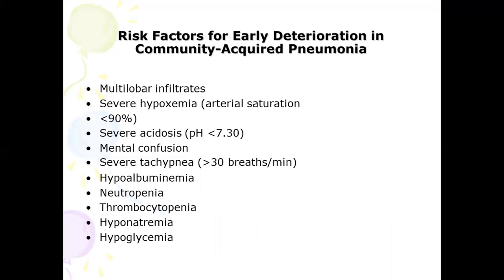We should know the risk factors that lead to early deterioration in community-acquired pneumonia: multilobar infiltrates, severe hypoxemia, severe acidosis, mental confusion, severe tachypnea, hypoalbuminemia, thrombocytopenia, hyponatremia, or hypoglycemia. You need to start empirical treatment as early as possible and may need to hospitalize the patient.